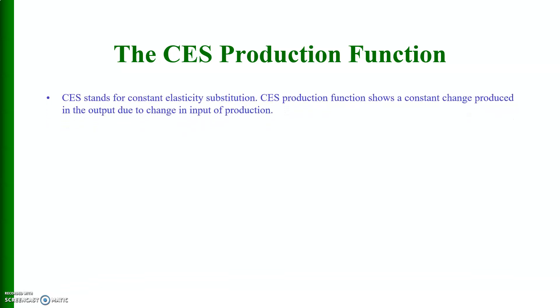The third type of production function is the Constant Elasticity of Substitution (CES) production function. This production function shows a constant change produced in the output due to change in input of production. The CES production function can be written as: Q = A · [α · K^(−β) + (1−α) · L^(−β)]^(−1/β).